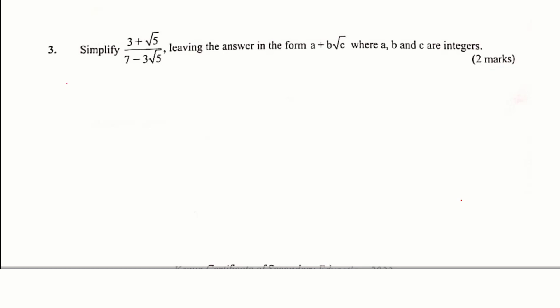To rationalize the denominator, you multiply both the numerator and the denominator by the conjugate of the denominator. Now what is the conjugate of the denominator? The conjugate of the denominator is 7 plus 3 root 5. This is what we refer to as the conjugate of the denominator.